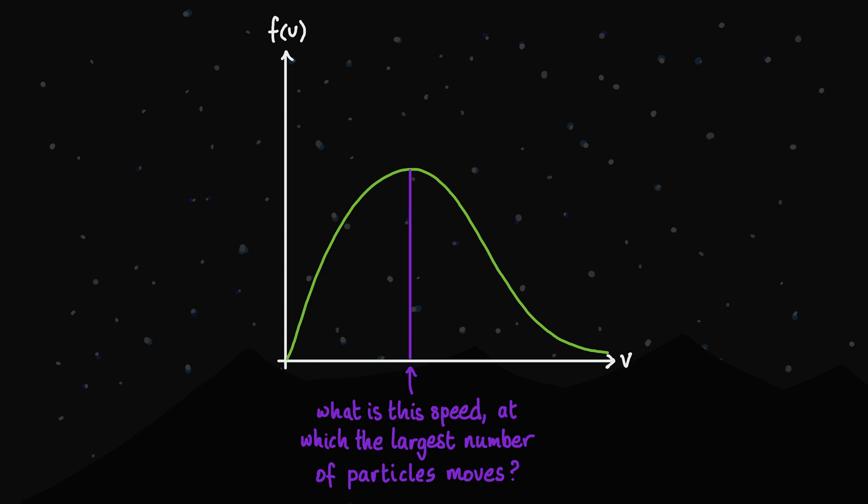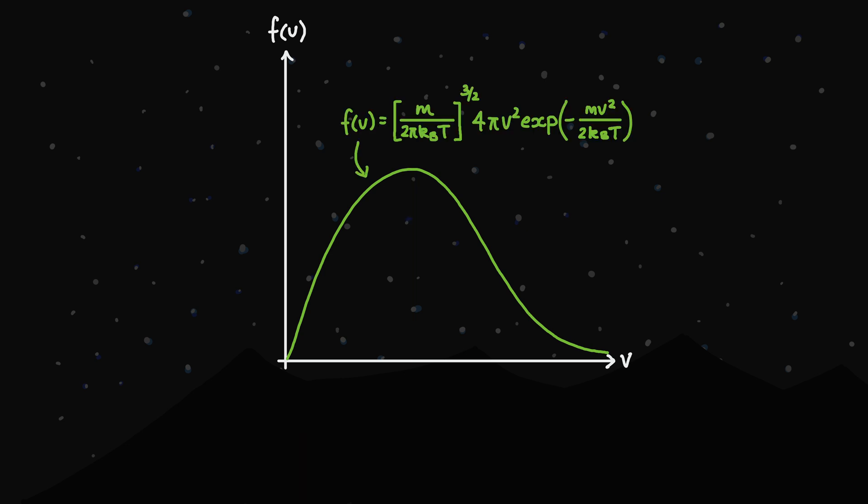An easy way to calculate this is to plot this probability density function with specific mass and temperature values. For example, let's assume that we're studying helium gas at room temperature, which is around 25 degrees Celsius or 298 Kelvin. When we plug in those values, our probability density function looks like this, with the modal speed being somewhere around 1100 to 1200 meters per second. That's around 4000 kilometers per hour or 2500 miles per hour. Super fast.